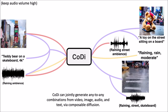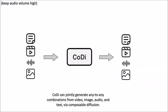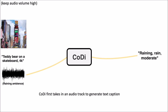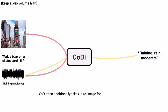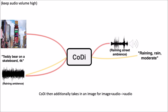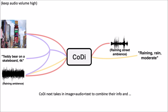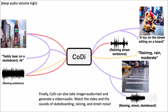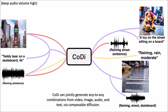Welcome back to another video. Today we're focusing on a new application from Microsoft called Kodi — any-to-any generation via composable diffusion. This is a framework that enables any-to-any generation of data using diffusion models, designed to generate diverse and coherent samples across different domains such as images, text, and other types of data, which we can see in this video playing right now.